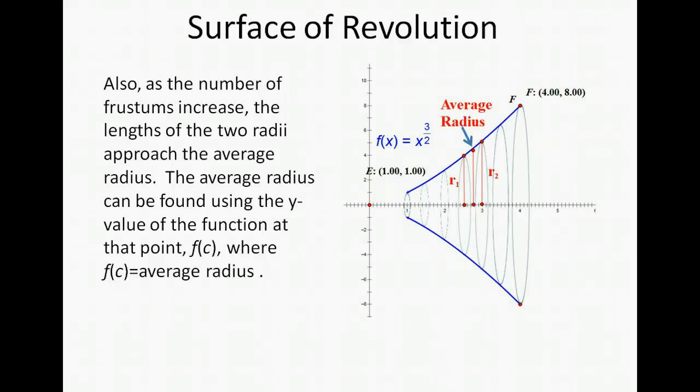Or in other words evaluating the function at whatever value we're looking at. In this case we'll call it c. So f(c) becomes the average radius.